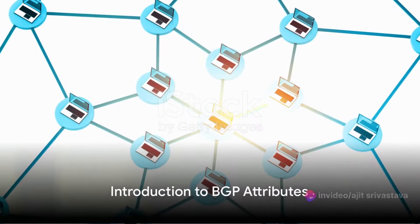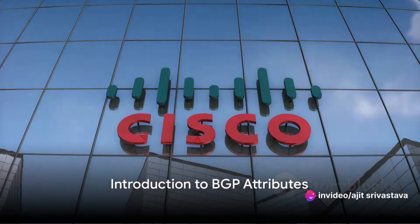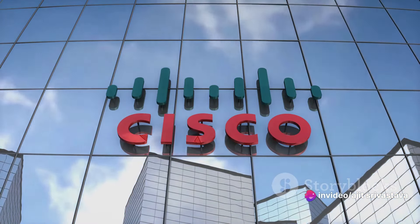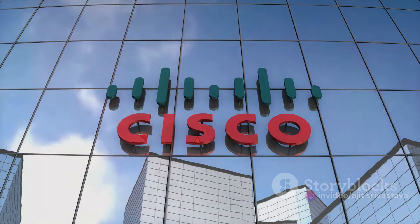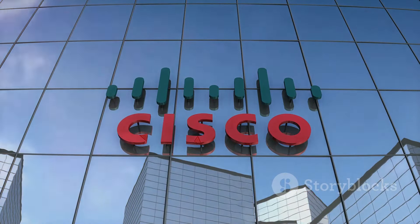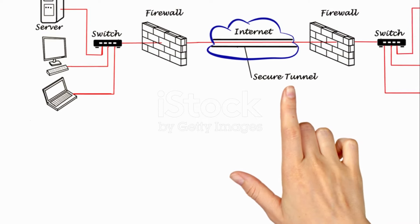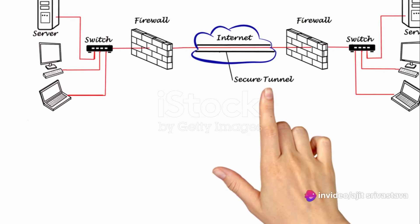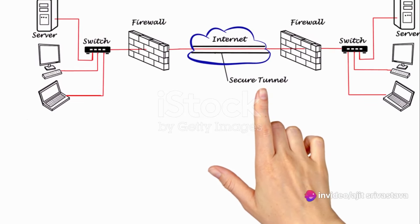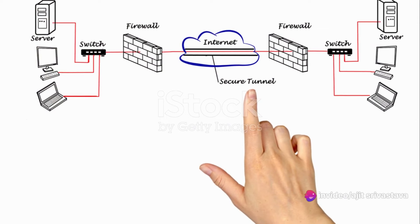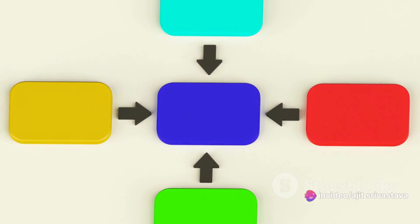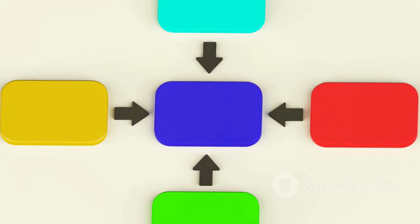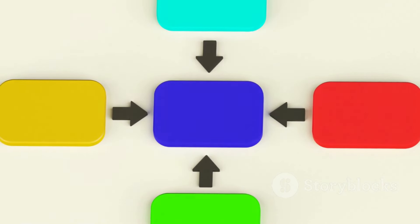Ever wondered how BGP attributes work in Cisco? Hold on tight, because this journey into the heart of networking protocols will surely pique your curiosity. First off, what are BGP attributes? BGP stands for Border Gateway Protocol, and it's the postal service of the internet, responsible for routing your data packets to their destination.